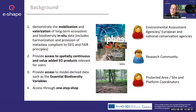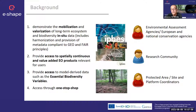Our networks try to address these issues by demonstrating the mobilization and valorization of long-term ecosystem and biodiversity in-situ data, including harmonization, to enhance accessibility and availability of data to a wider range of stakeholders and users. We also provide access to spatially continuous, value-added Earth observation products, as well as modeled data such as Essential Biodiversity Variables, completing the link from in-situ data to Earth observation to indicators for decision support and science-policy interface. The major aim was to have a one-stop shop integrating this information.